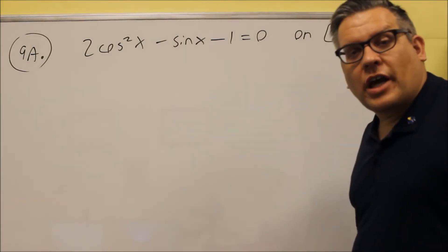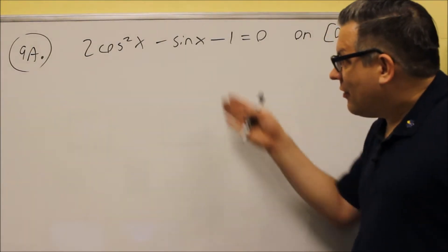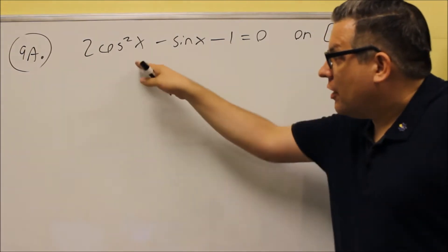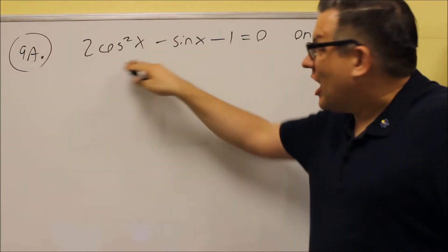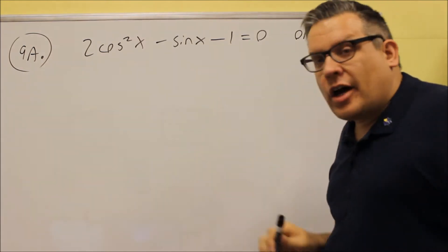Okay, number eight we did that by taking out a common factor. Unfortunately, we're not going to be able to do that on number 9a here because we don't have anything that's common to all those. We've got a cosine and we have a sine.